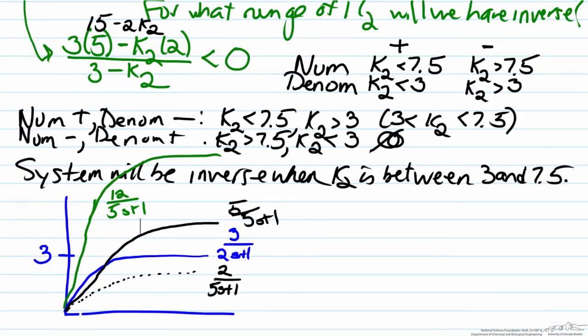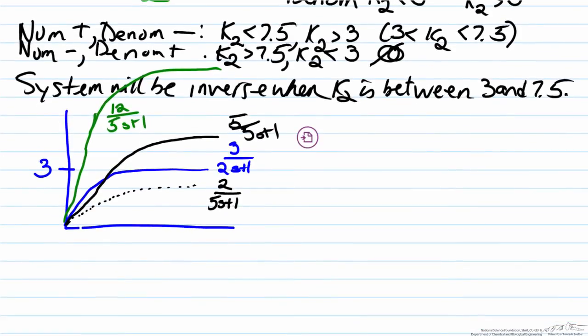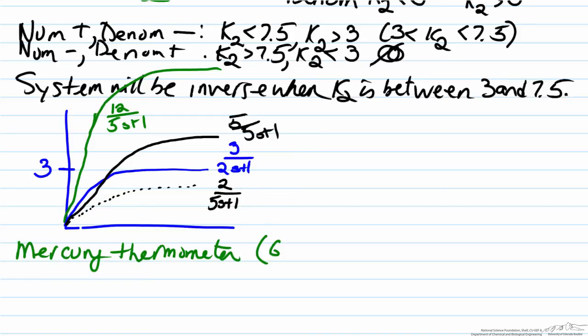Practically, inverse responses can occur in real systems. One example is a mercury thermometer, where the competing processes are the glass expanding — creating a larger volume which causes the mercury level to decrease — and the mercury itself expanding.